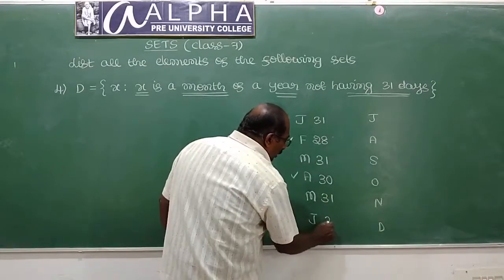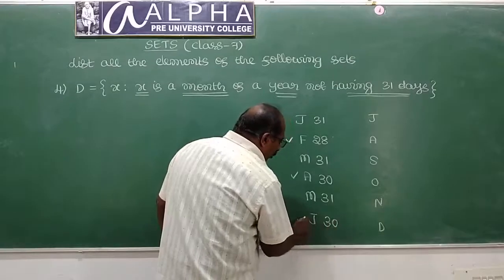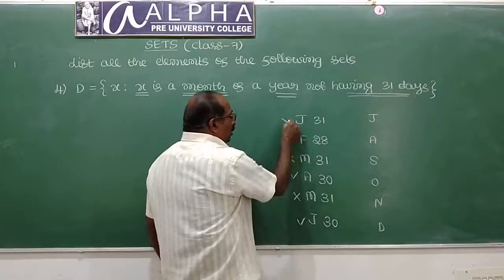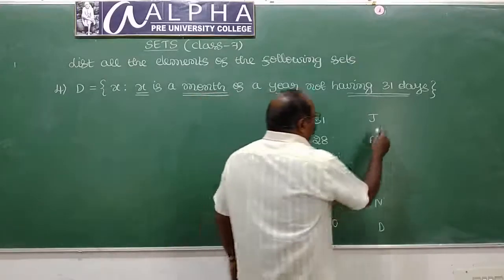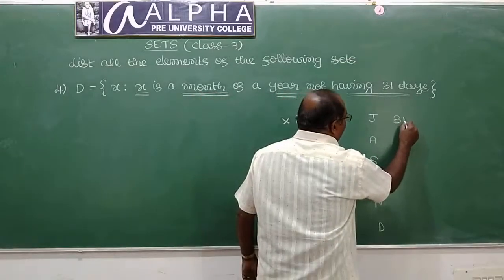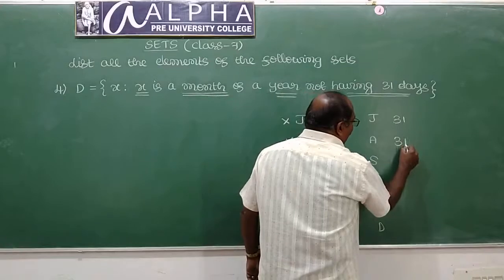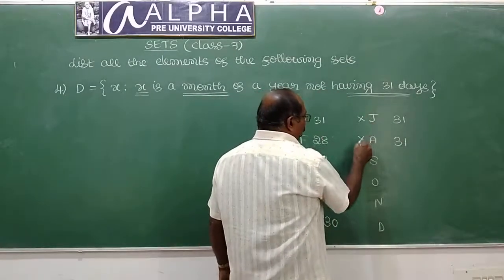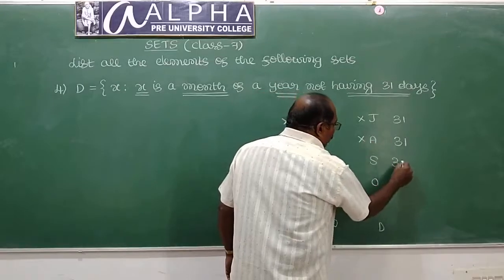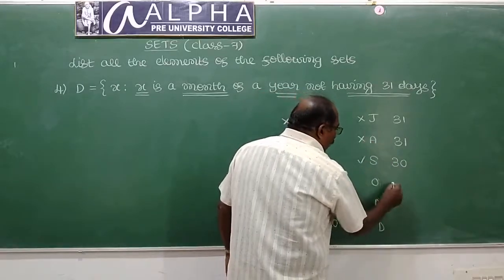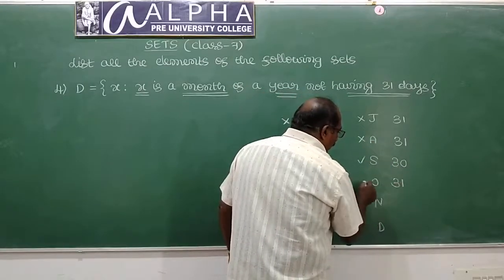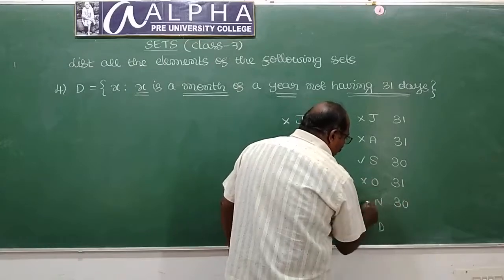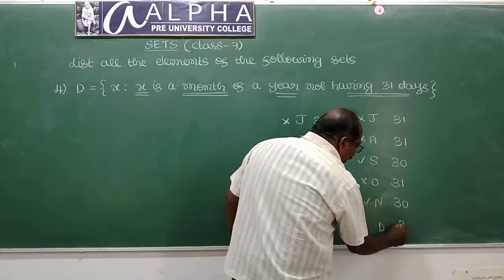June has 30 days. May, March, January, July, August have 31 days — very important. Therefore, July and August are not elements. September has 30 days. October has 31 days. November has 30 days. December has 31 days.